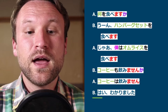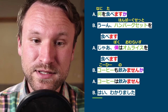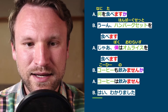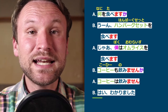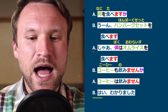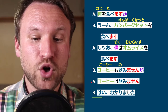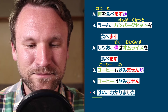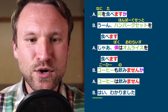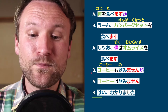Here's our first conversation, which I'll read slowly first then at full speed. 何を食べますか? (What will you eat?) — ハンバーグセットを食べます (I'll eat the hamburger set). — じゃあ、僕はオムライスを食べます (Well then, I'll eat omurice). — コーヒーも飲みませんか? (Won't you also drink coffee?) — コーヒーは飲みません (I won't drink coffee). — はい、わかりました (Got it).